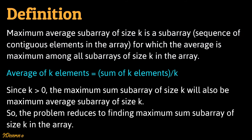Now, the average of k elements is the sum of k elements divided by k. Since k is greater than 0, the maximum sum subarray of size k will also be a maximum average subarray of size k. So the problem reduces to finding the maximum sum subarray of size k in the array.